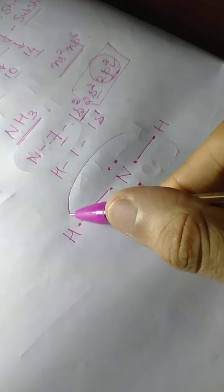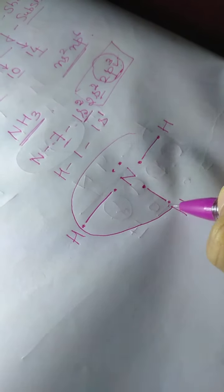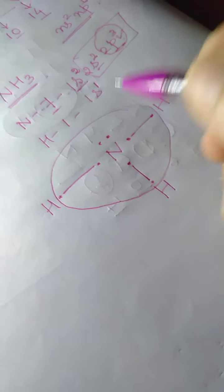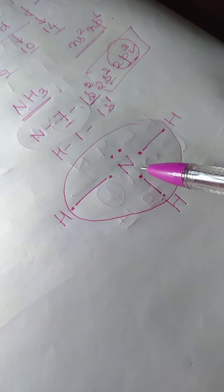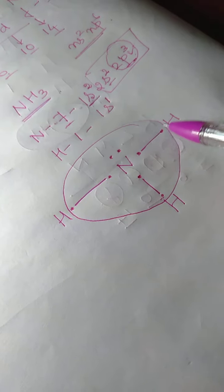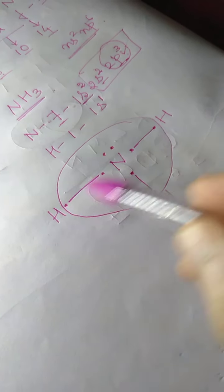So nitrogen will share 1 electron with each of 3 hydrogen atoms. After sharing, we count: 1, 2, 3, 4, 5, 6, 7, 8 electrons around nitrogen. Hydrogen requires 2 electrons to attain stability because hydrogen has the S sub-shell, which can accommodate a maximum of 2 electrons.